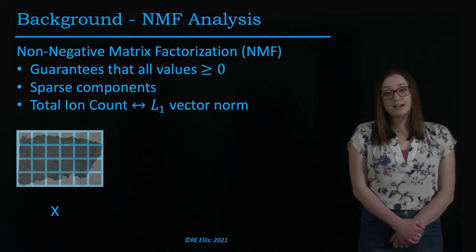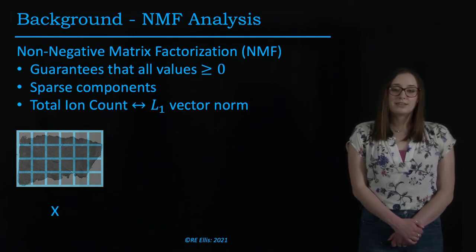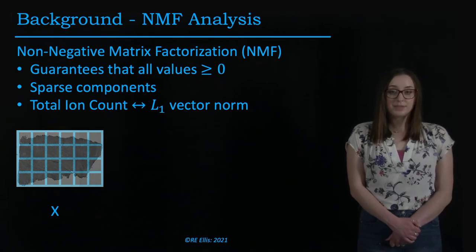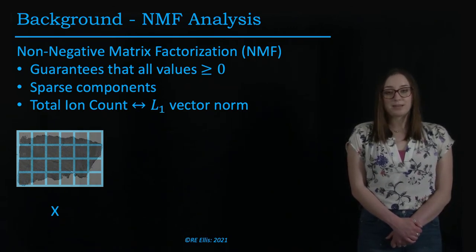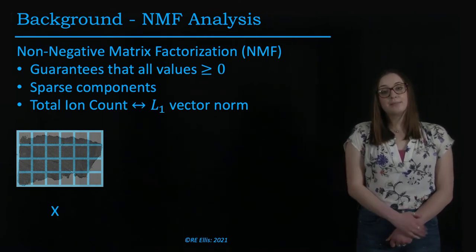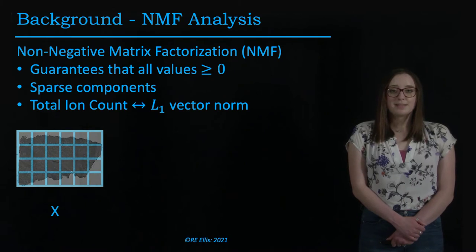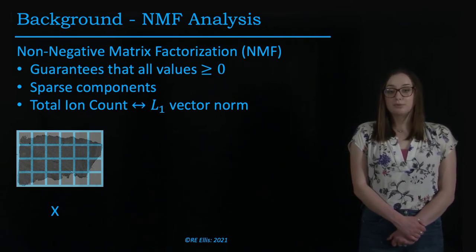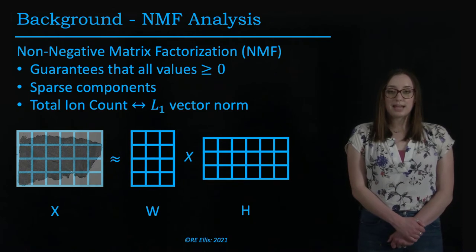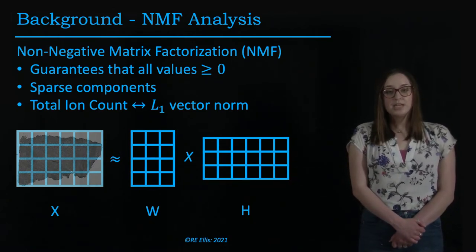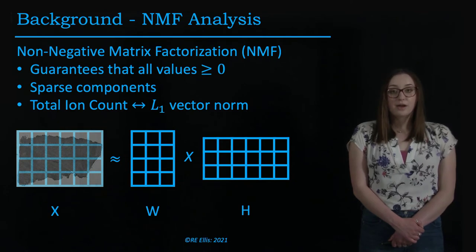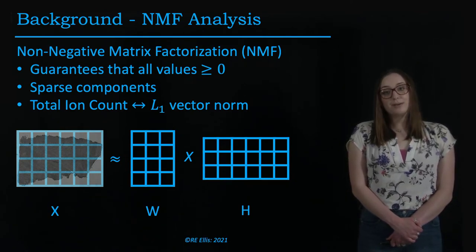Each pixel can hold 1,000 or more values, making the processing of MSI a high-dimensional problem. As a result, dimensionality reduction is necessary. We chose to use non-negative matrix factorization, or NMF. NMF guarantees that all values are non-negative, it produces sparse components, and TIC normalization, which is used in mass spectrometry, can be represented with the L1 vector norm formulation. We reformat the MSI such that each pixel is along one dimension and the second dimension contains the ion abundances. We can then approximate X using two matrices W and H at a predetermined rank — rank 3 in this example. When multiplied together, W and H can approximate the matrix X and tell us the ion patterns, or ion signatures, that best represent the image.